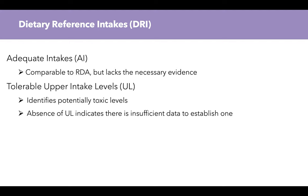The UL is a little bit different. This is used to identify potentially toxic levels. If you exceed the UL, you are increasing the probability of experiencing negative side effects from your intake. Some nutrients don't have a UL, which indicates there is insufficient data to establish one — meaning that even at very high intakes, they have not seen signs of toxicity.